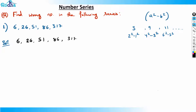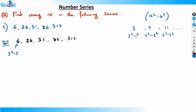The key approach here: 6 is in the form a² - b² using prime numbers. Specifically, 3² - 2² = 5, plus 1 = 6. For 26: the next two primes are 7 and 5, so 7² - 5² = 24, plus 2 = 26. For 51: the next primes are 13 and 11, so 13² - 11² = 48, plus 3 = 51.